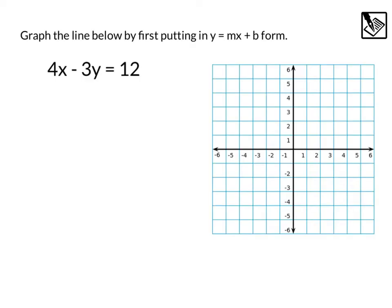To start things off, let's graph the line below by first putting in y equals mx plus b form. We have a linear equation 4x minus 3y equals 12. We know it's linear because x and y both have an exponent of 1, or an exponent that we can't see, but we want to make it look like this y equals mx plus b.